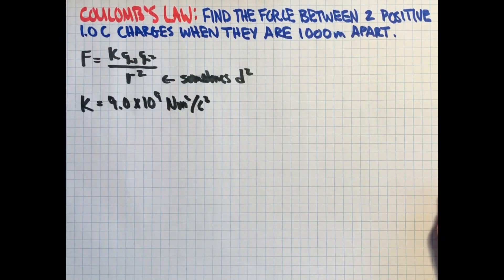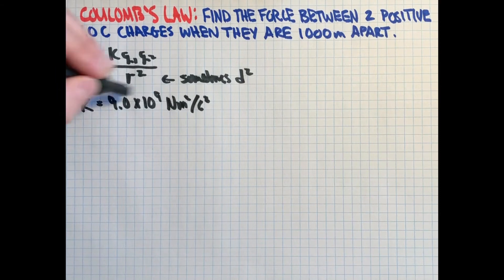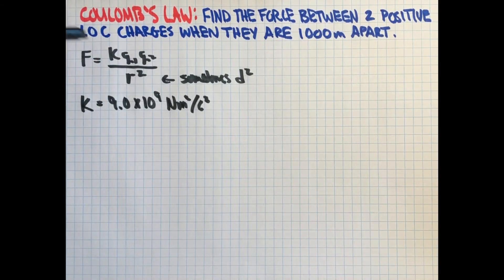This should look very familiar if you've studied gravity where G in the gravity equation is 6.67 times 10 to the minus 11 Newton meters squared per kilogram squared because we have masses in here. So this is a really interesting similarity in that the force of gravity and the electrostatic force are mathematically equivalent. We just use different numbers.